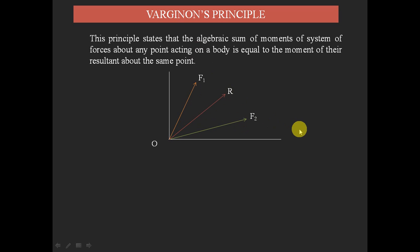This principle is used to find any unknown element in a system of forces acting on a body. If any one load is unknown among a number of forces acting on a body, we can find that load value using Varignon's Principle, by knowing the distances between the individual forces. We can also find an unknown distance if all load values are known. That is the application of Varignon's Principle for finding unknown values when loads act at particular distances from each other.